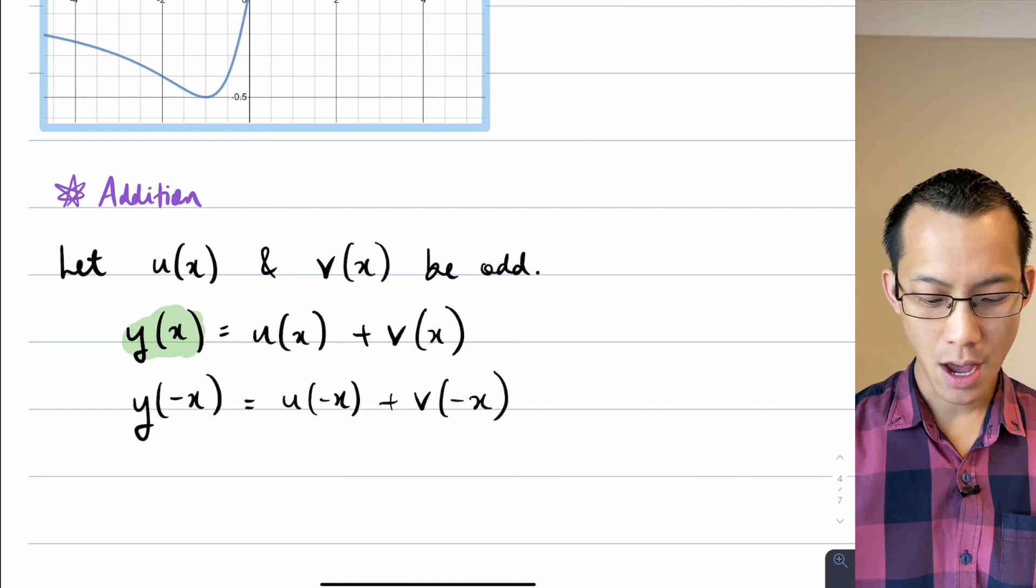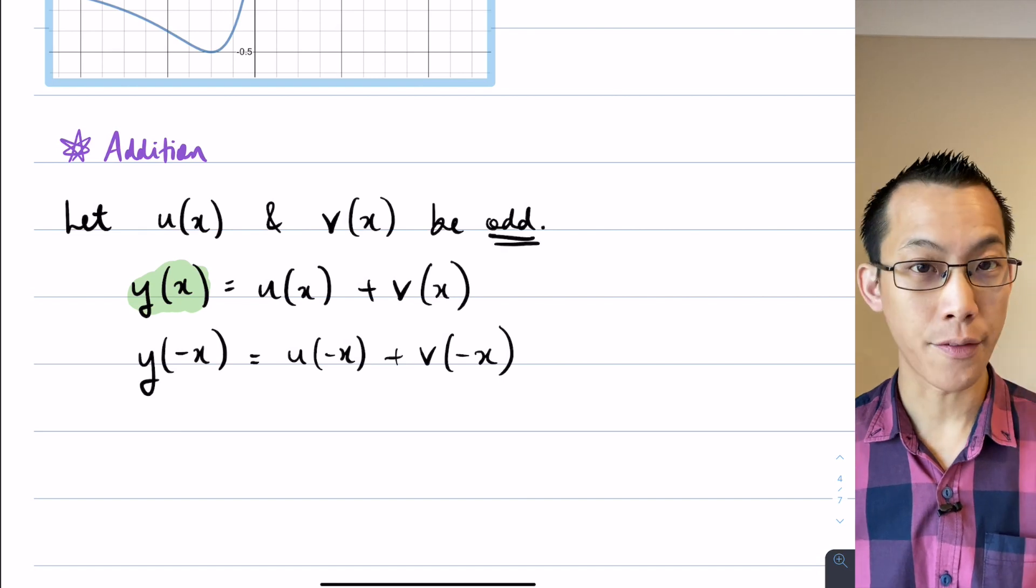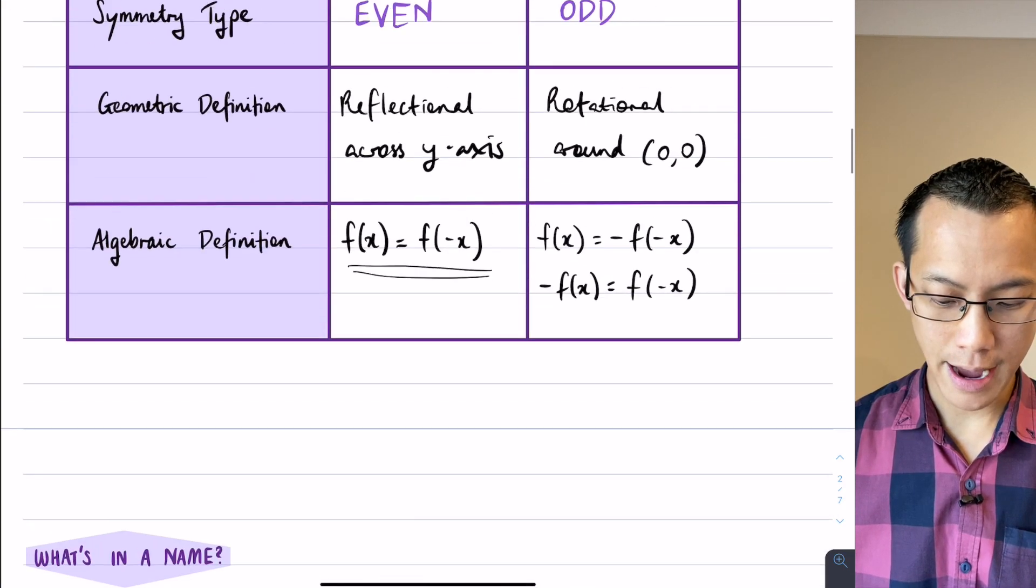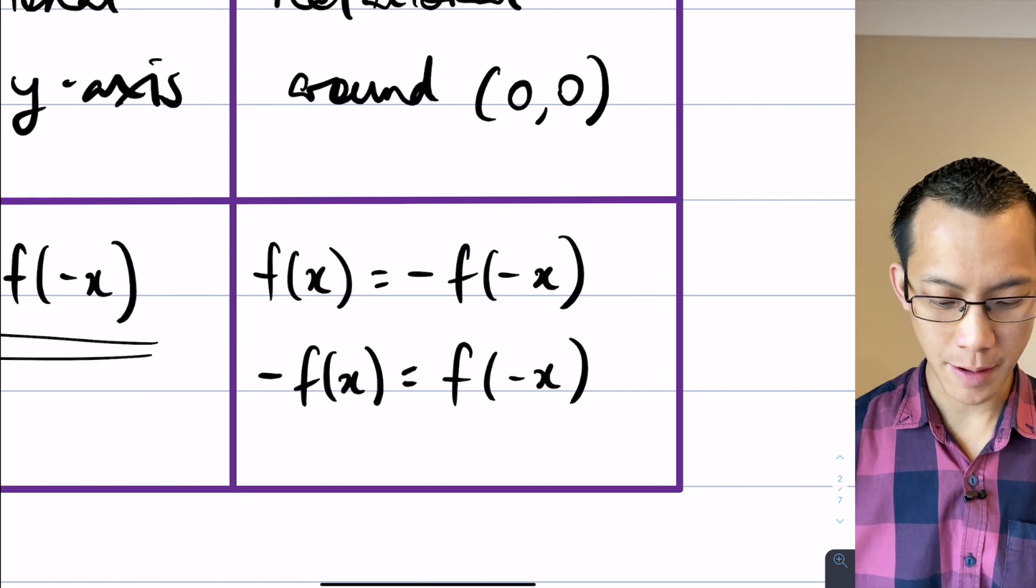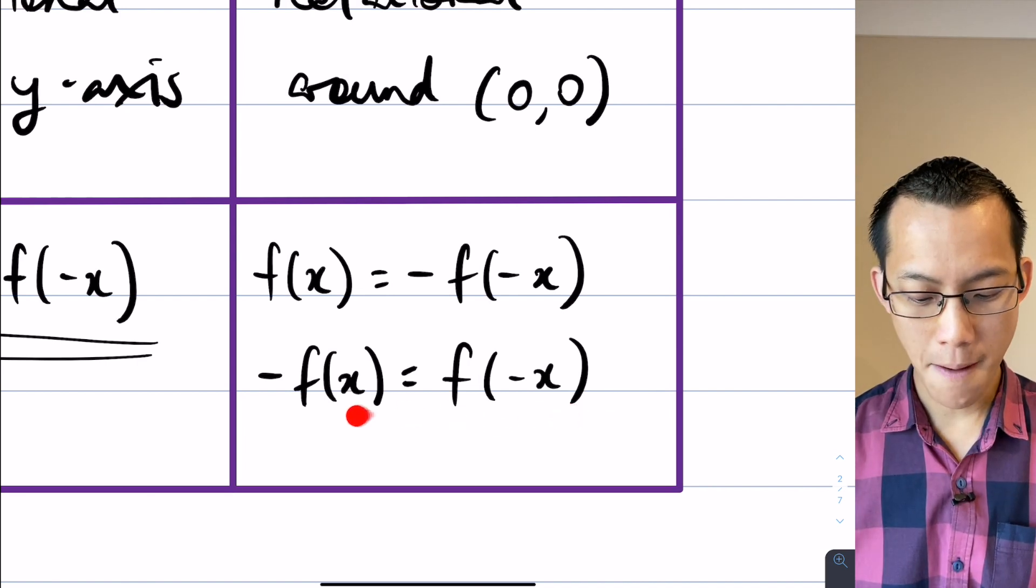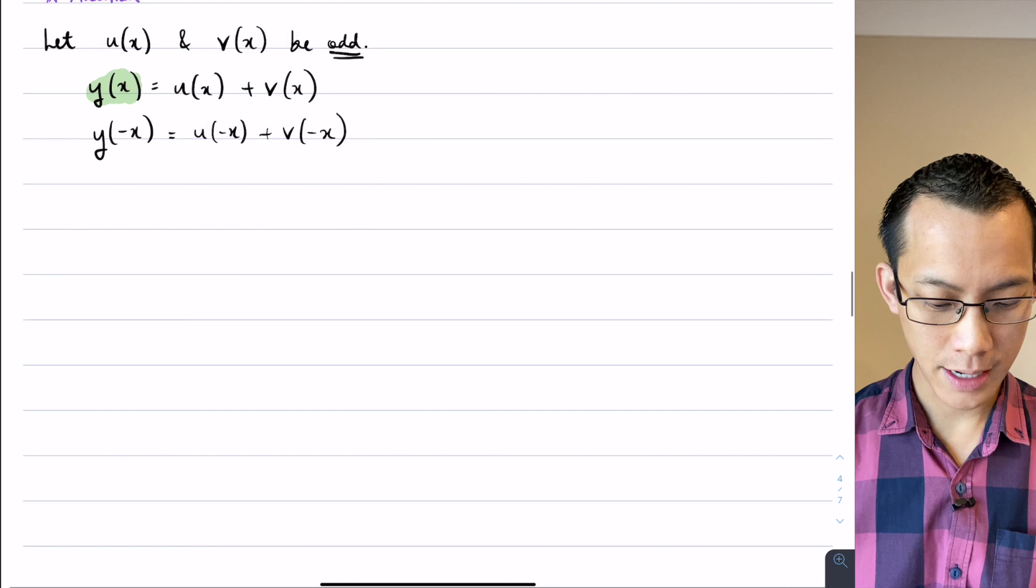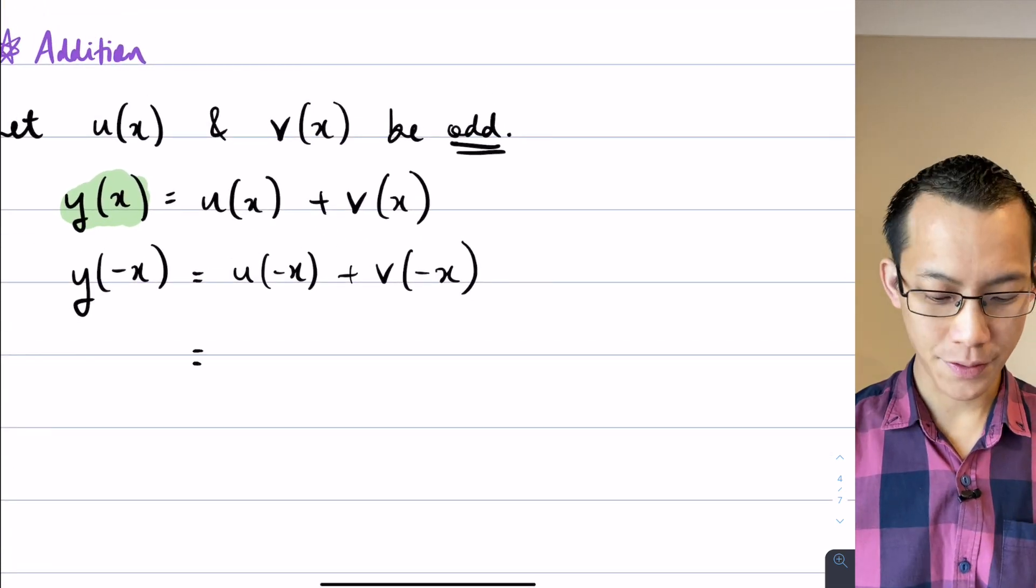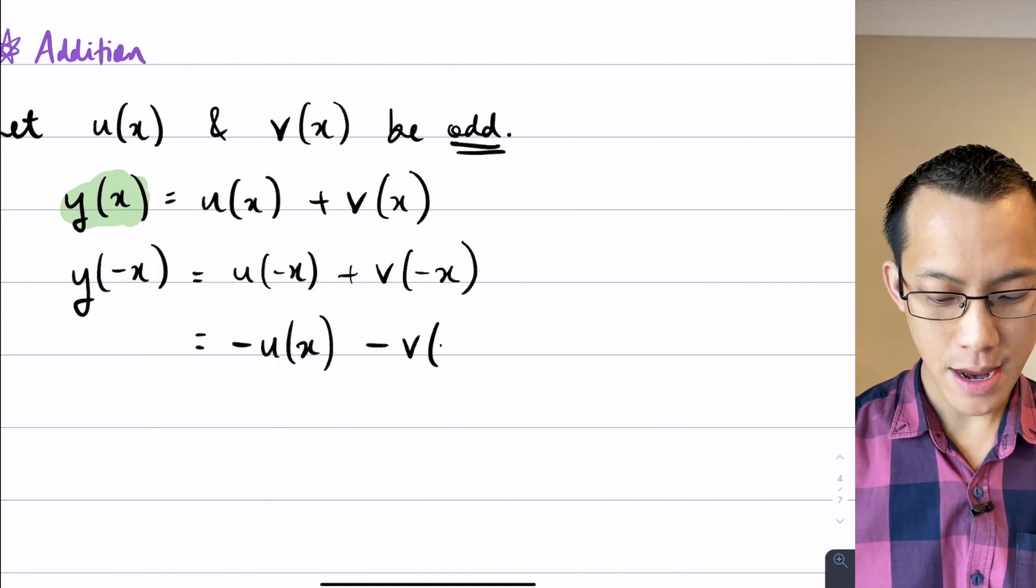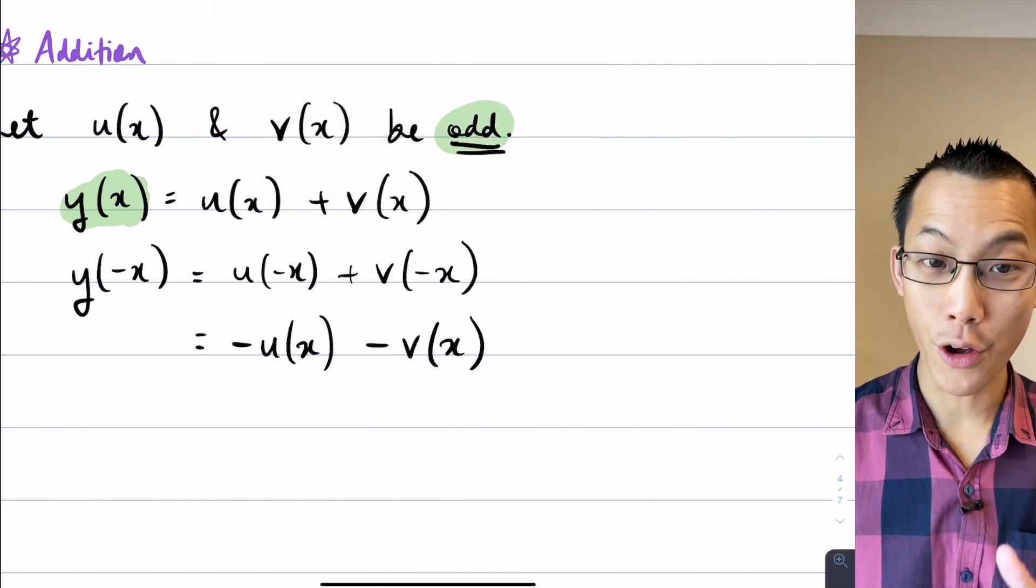Well this is going to give me u of negative x plus v of negative x. Just a straight substitution, everywhere I saw x I will put in negative x. But here's the thing, because I know that u and v are odd, I know some things about u of negative x and v of negative x. If I go all the way back up to my algebraic definition, this f of negative x is equivalent if my function is odd to negative f of x. These two things are interchangeable. So therefore with my u's and my v's down here, I can substitute each of those for a negative u of x and a negative v of x. I can only do that because I know these functions are odd.